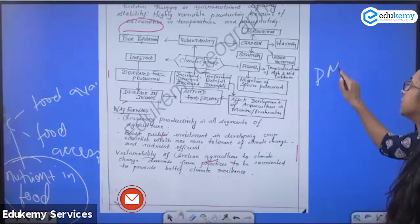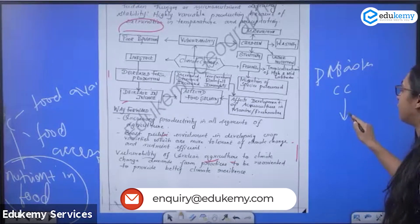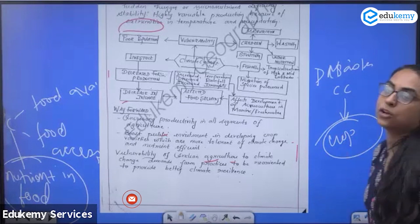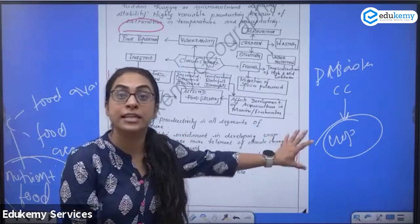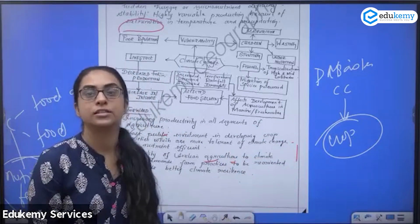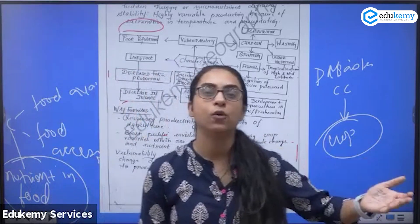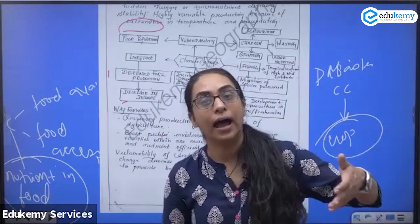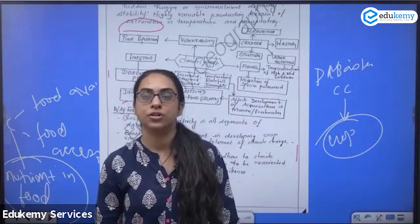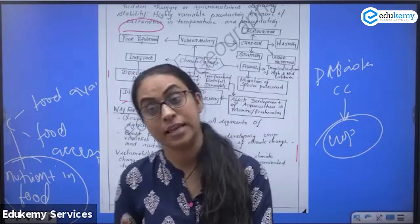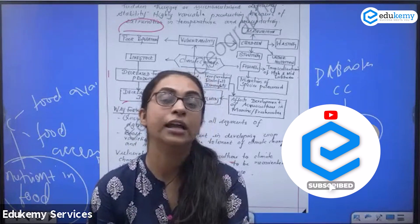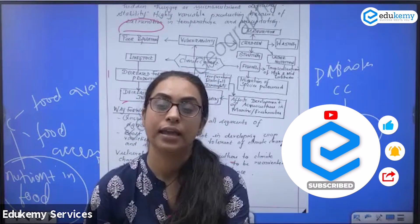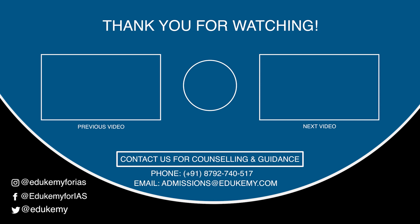One more aspect missing from the answer is disasters related to climate change affecting crops. Not only food availability, accessibility, and nourishment, but also resilience is affected. Crops get destroyed by cyclones and tsunamis, which are increasing due to climate change. You can also give a case study of the locust attack that recently affected Rajasthan and surrounding areas.